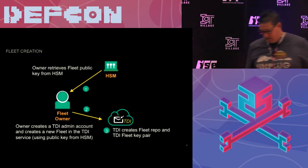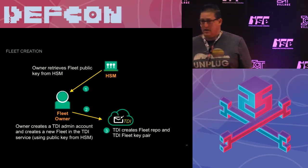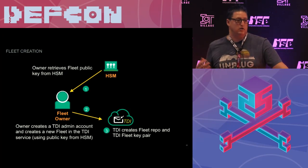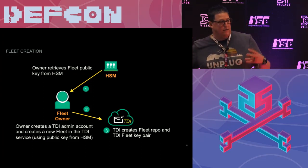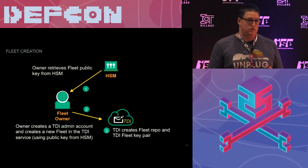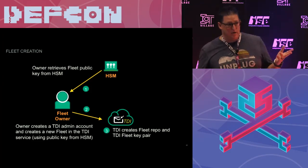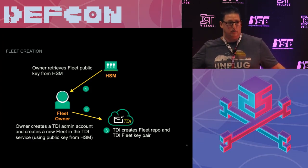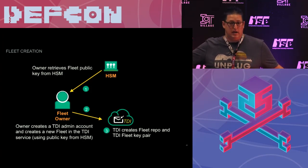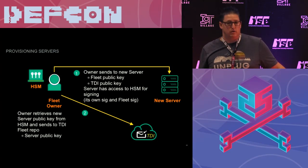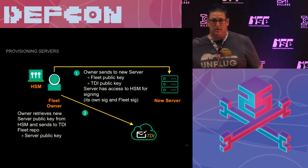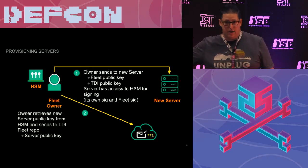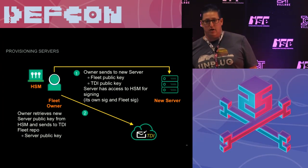Let me go through the workflow. When you want to create a fleet, if you have an HSM, you grab the public key and upload it into the TDI interface; otherwise you use the API or SDK to generate a public-private key pair. Then you have a fleet, and you can assign an owner — an administrator who can add or remove servers and devices, your NOC and SOC members. TDI creates a separate instance so that fleet's keys are completely separate from any other fleet. To provision servers, you generate keys through an HSM or the API. The server gets the private key; the public key goes to TDI, which verifies in real time that the server is valid — it's literally just a copy-paste of the public key into the dashboard.